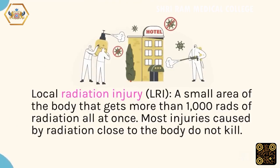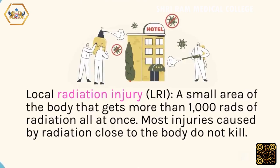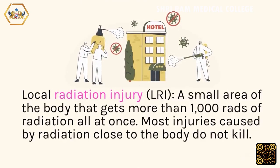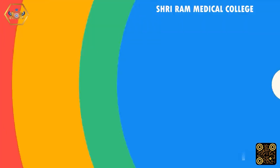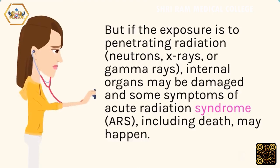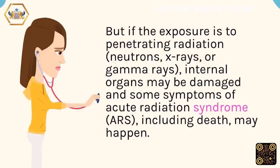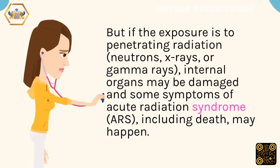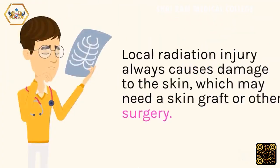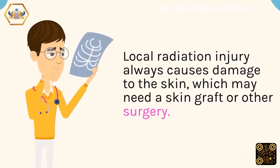Local Radiation Injury: a small area of the body that gets more than 1,000 rads of radiation all at once. Most injuries caused by radiation close to the body do not kill. But if the exposure is to penetrating radiation — neutrons, x-rays, or gamma rays — internal organs may be damaged and some symptoms of acute radiation syndrome (ARS), including death, may happen. Local Radiation Injury always causes damage to the skin, which may need a skin graft or other surgery.